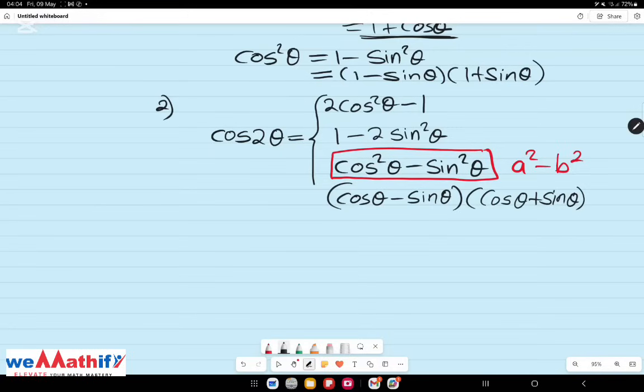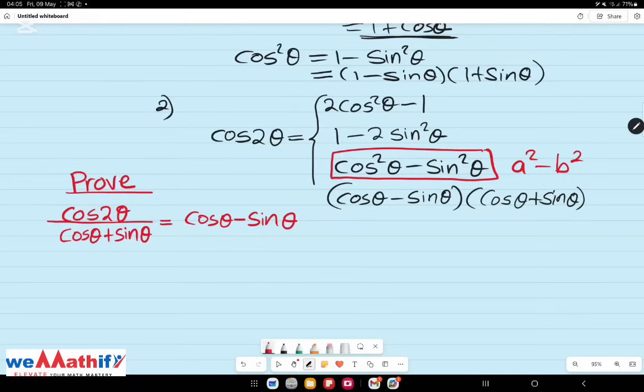An example of an application of this identity is this scenario here. Prove cos 2 theta over cos theta plus sine theta equals to cos theta minus sine theta. While this is a basic identity, the point I want to illustrate here is when you look at cos 2 theta, you now know that it can be written as a difference of two squares. And therefore, this is going to influence your choice of identity.